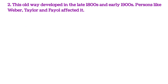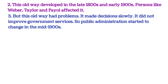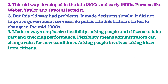यह पुराना तरीका 1800 के आखिर और 1900 के शुरुआत में develop हुआ. लेकिन इस पुराने तरीके में दिक्कतें थीं: इसने धीरे-धीरे decisions लिये, इससे सरकारी सेवाओं में सुधार नहीं हुआ. इसलिए 1900 के दशक के बीच में public administration में बदलाव शुरू हुआ.